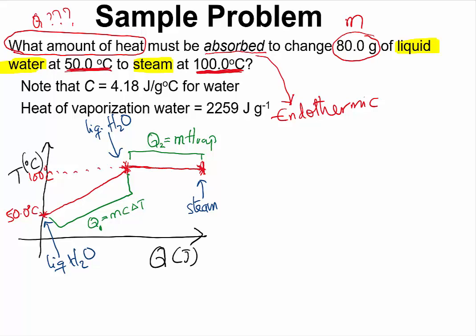So to calculate Q1, we know the mass of the liquid water. It is given as 80.0 grams. We know the specific heat capacity for the liquid water. It is given as 4.18 joules per gram per degree Celsius. So 4.18 joules per gram per degree Celsius. And the change in temperature of the water, it is going from 50.0 degrees Celsius to 100 degrees Celsius. So that would be 50.0 degrees Celsius.